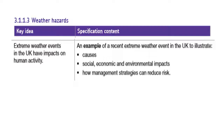This is the second video on your extreme weather event example, which is Boscastle. Remember it's in August — the 16th of August 2004, an extreme weather event in the UK, in Cornwall, in the village of Boscastle. We've done the causes previously; we'll now look at the social, economic, and environmental impacts.